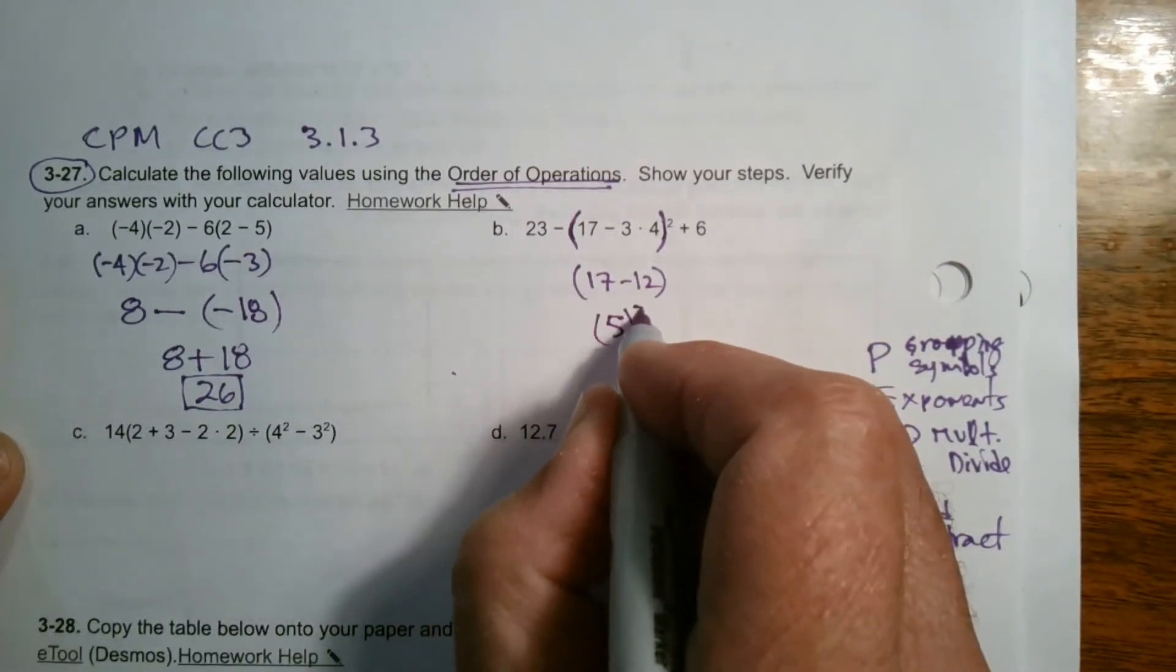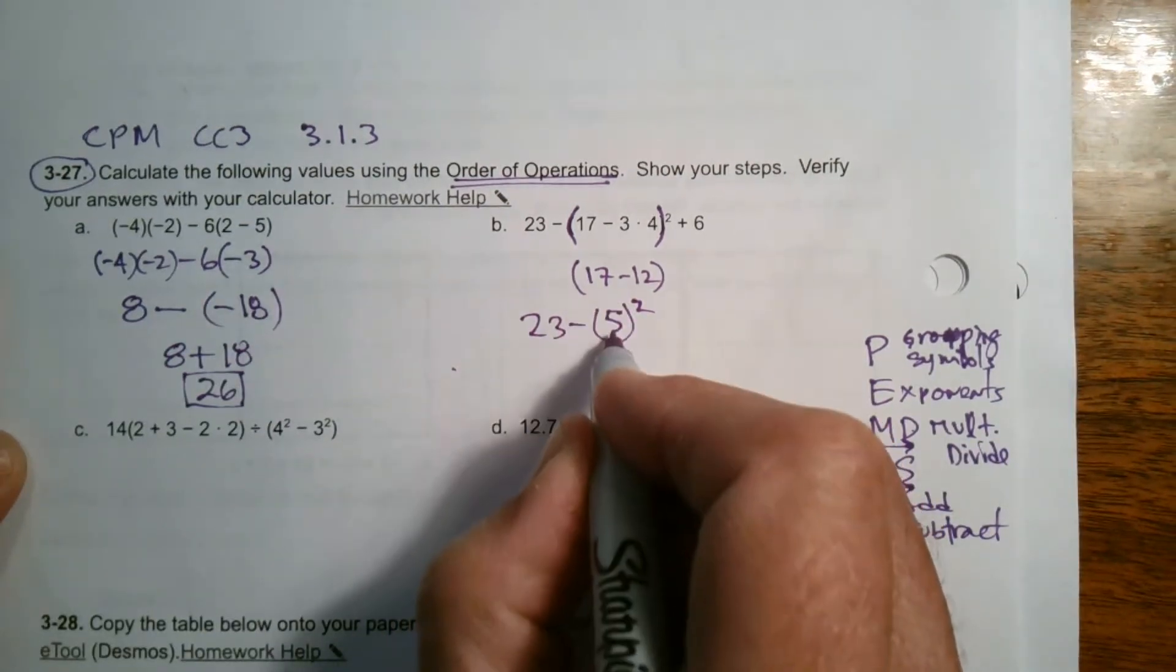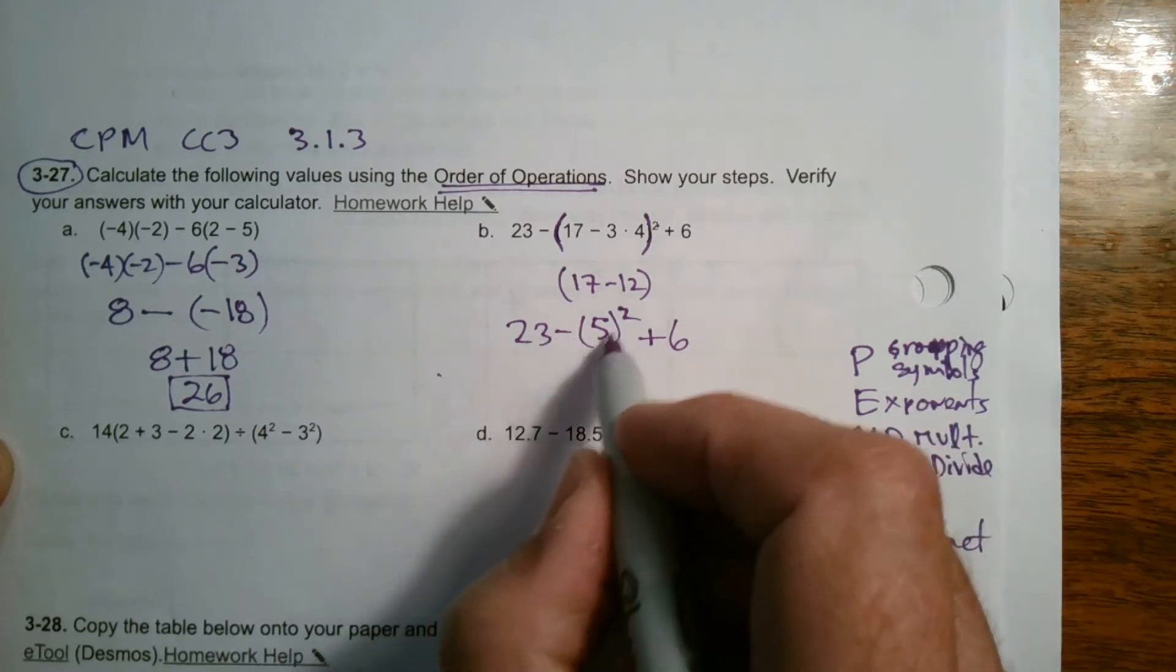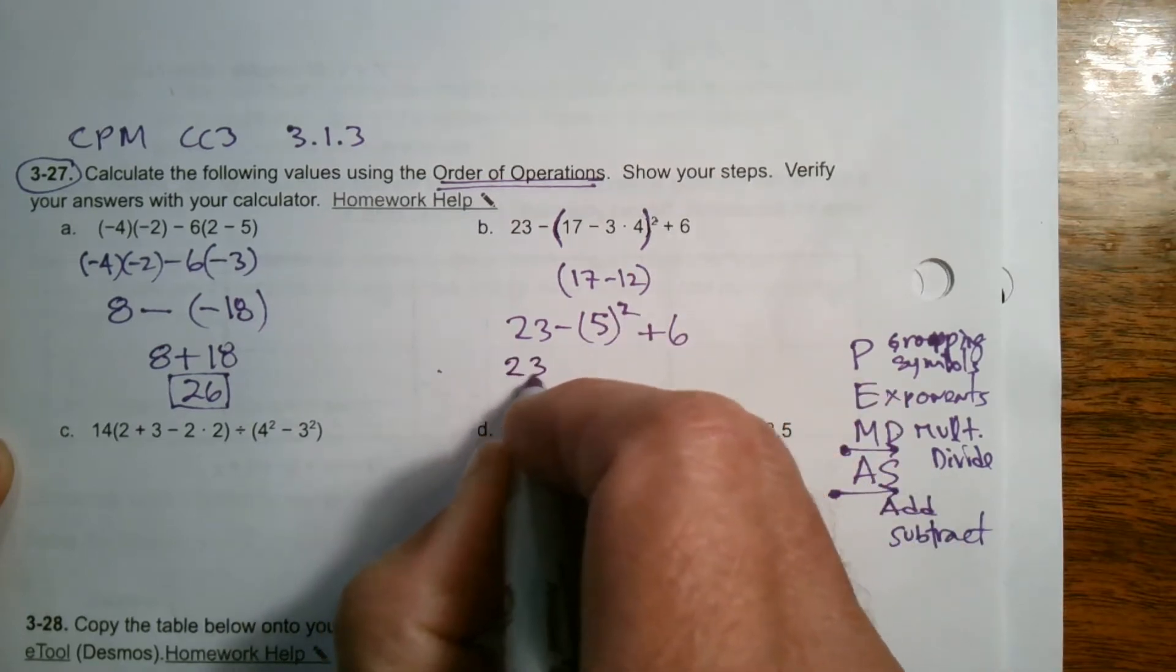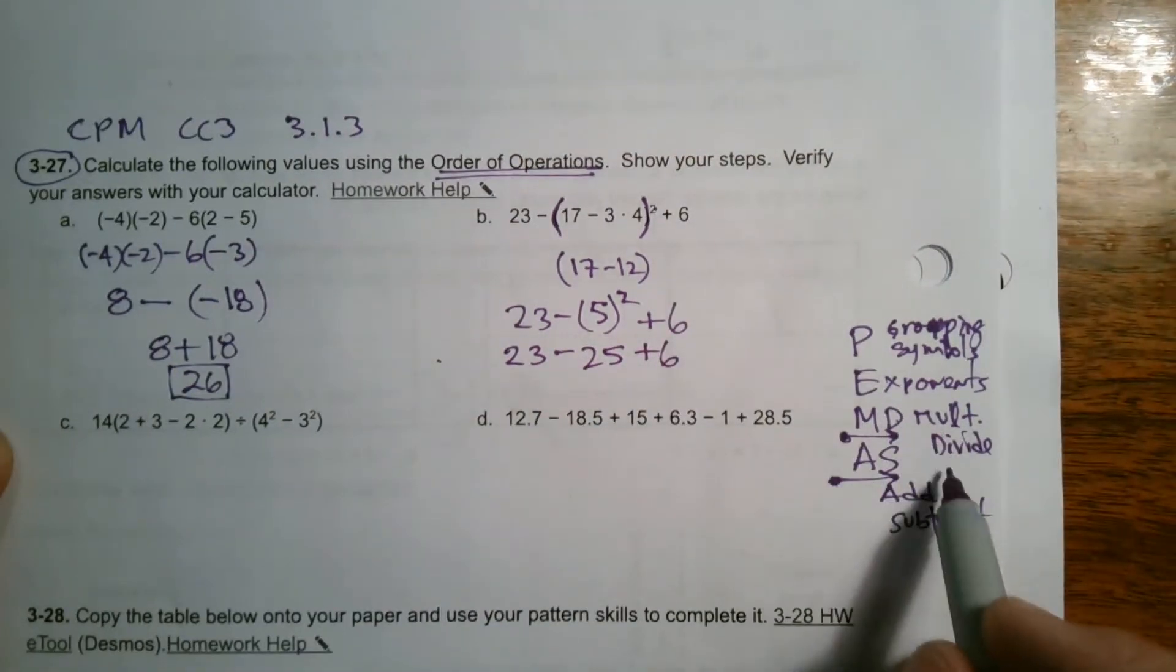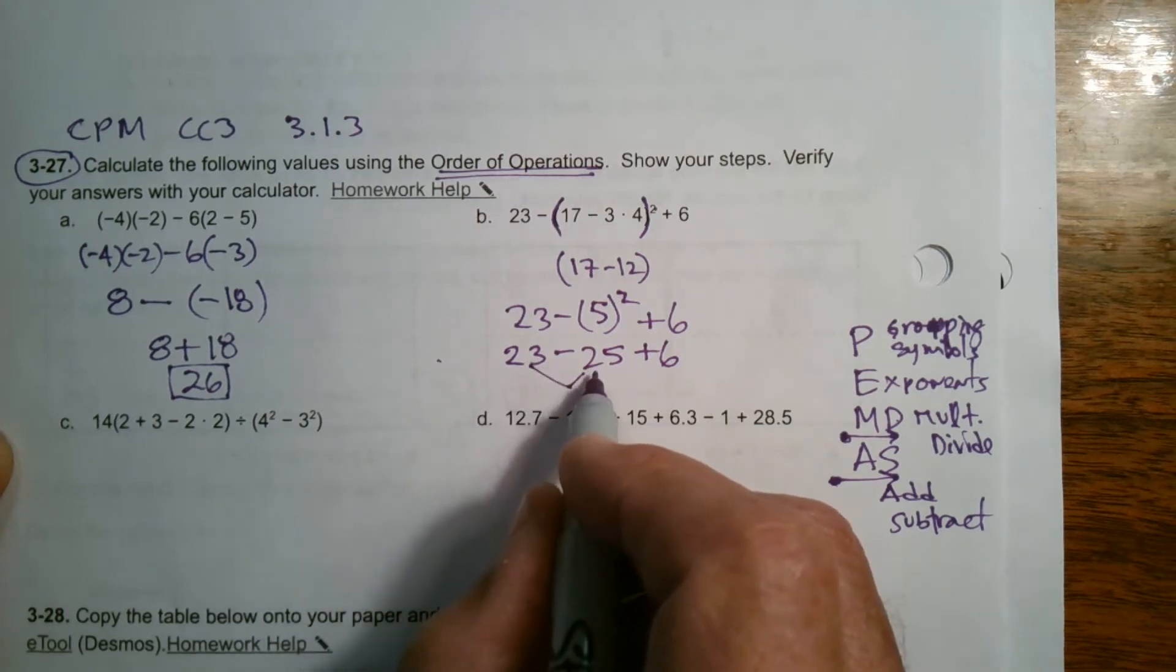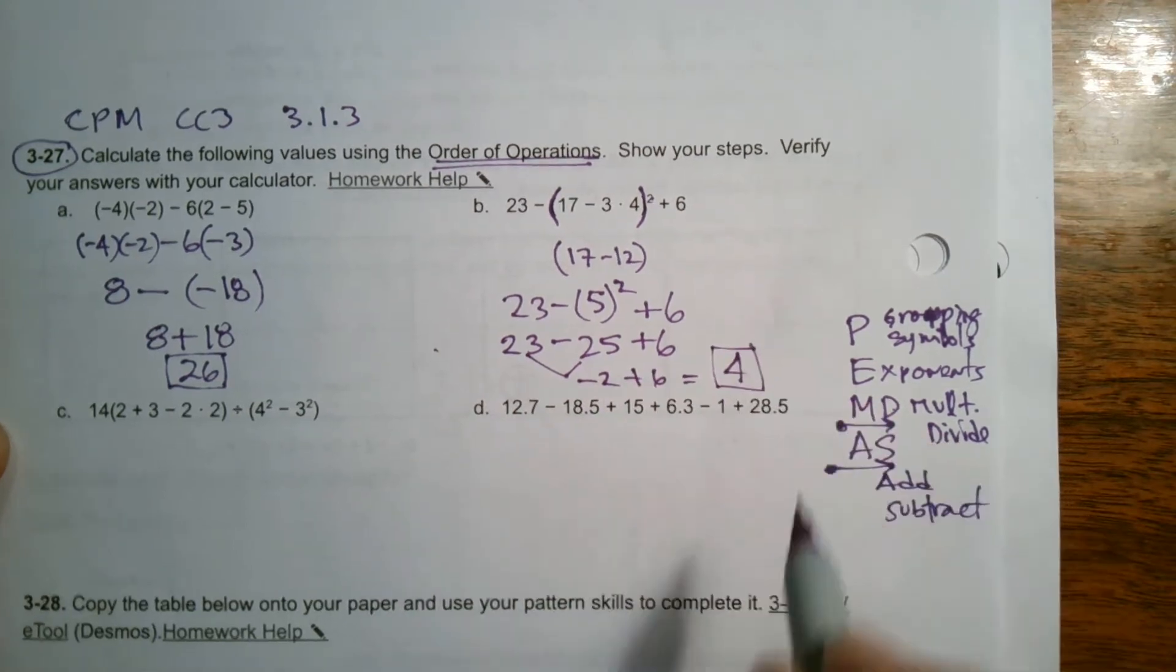So now I ended with one number on the inside of the parentheses. I have that 23 minus inside the parentheses just a five. On the outside of the parentheses was that squared and then plus six. So I'm done with grouping symbols. Now on to exponents. Five squared is 25. Squared means you multiply by itself, so it's five times five is 25 plus six. Now I don't have any multiply or divide, only subtract and add. It's not add first and subtract, it's just left to right. So 23 minus 25 is negative two. Then negative two plus six finally equals four. So my final answer for that one is four.